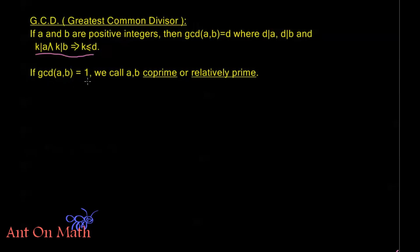Now if GCD of A and B equals 1, we call A and B coprime, or relatively prime. For example, the GCD of 6 and 25 equals 1. These have no factors in common at all, 6 is 2 times 3, 25 is 5 squared, so the GCD is just 1, which means that we would call 6 and 25 coprime, or relatively prime to each other.